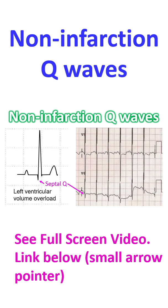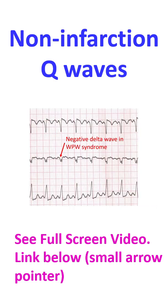Unlike the pathological Q waves of myocardial infarction, these septal Q waves are narrower than 40 ms. Q waves can also occur in tachycardia-induced cardiomyopathy.